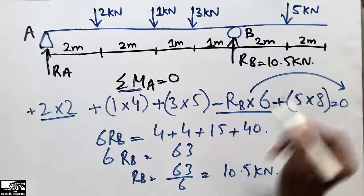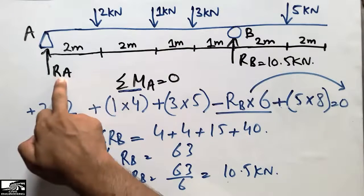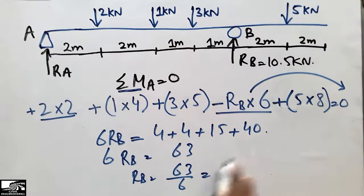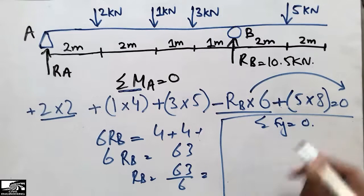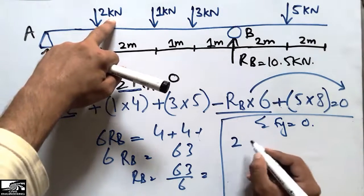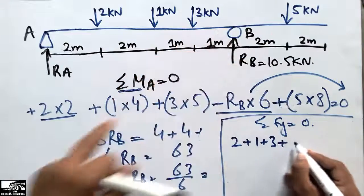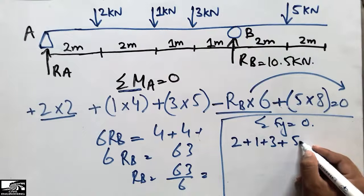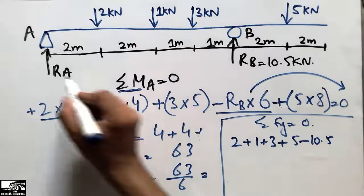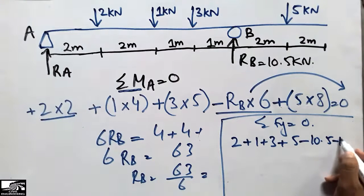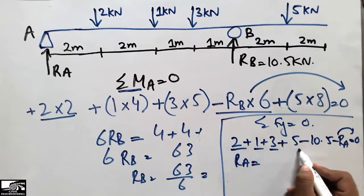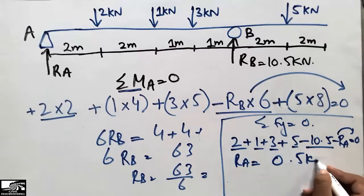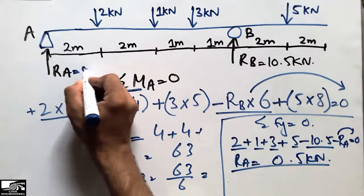To find RA, we take the summation of vertical forces equal to zero. All downward loads are positive: 2 + 1 + 3 + 5 = 11. RB is acting upward, so minus 10.5. RA is also upward, so minus RA equals zero. Transferring RA to the right side: RA = 11 − 10.5 = 0.5 kN.